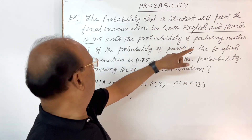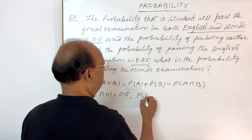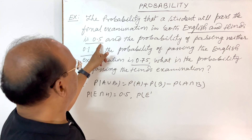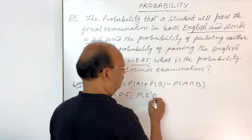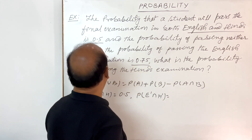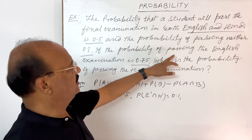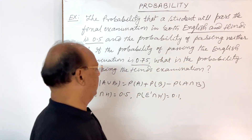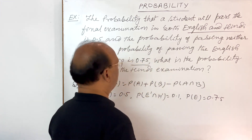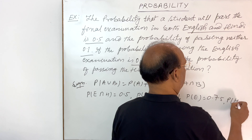Secondly, the probability of passing neither is 0.1, which means the probability of E complement intersection H complement equals 0.1. And the probability of passing the English examination, P(E), is equal to 0.75. We have to find out the probability of passing Hindi, P(H).